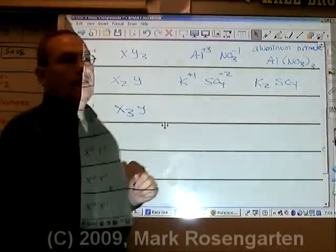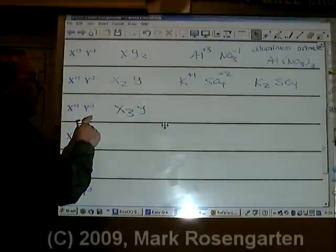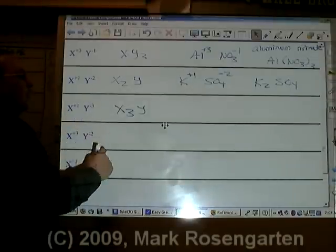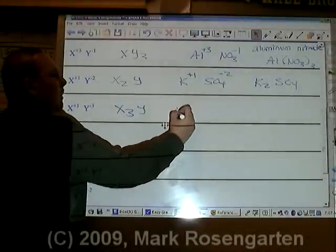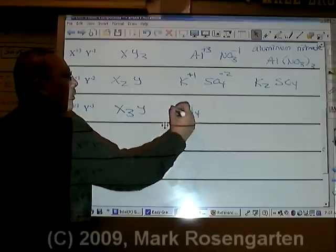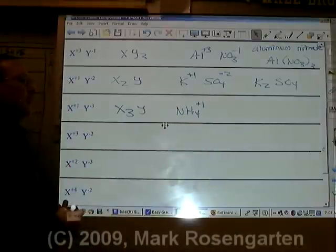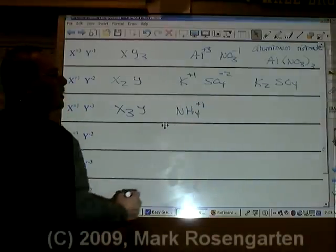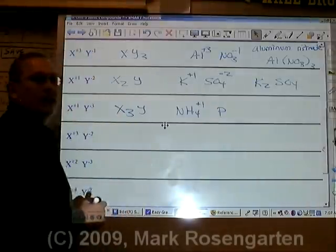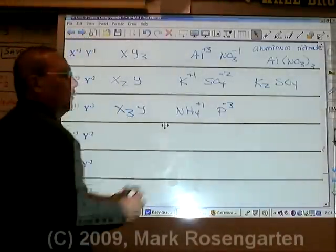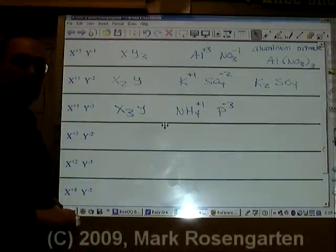We have X plus one, and Y minus three. So, let's suppose that we have ammonium, NH₄ plus one, and as a minus three ion, we have phosphide, P⁻³. How do we know that phosphide is minus three?